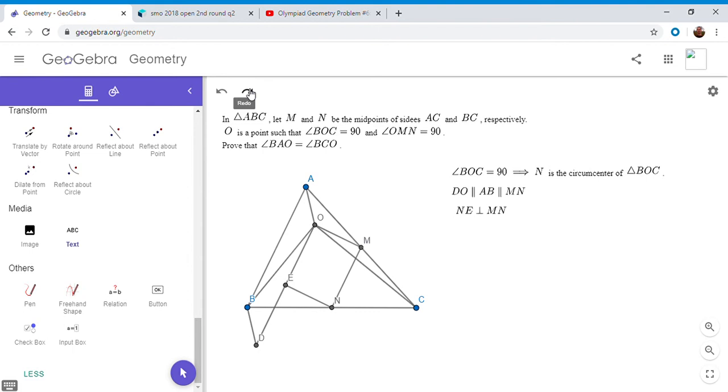So now we have enough to show, so now we've basically shown that OMEN is a rectangle, because we have this is a right angle, OEN is a right angle by construction, because I defined E to be the perpendicular, and by the problem statement, OMN is a right angle. So OMEN is a rectangle.